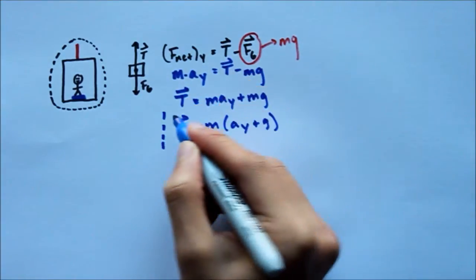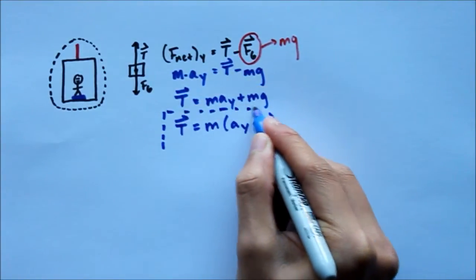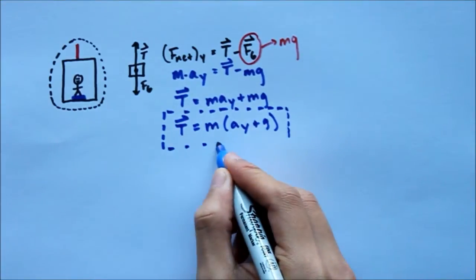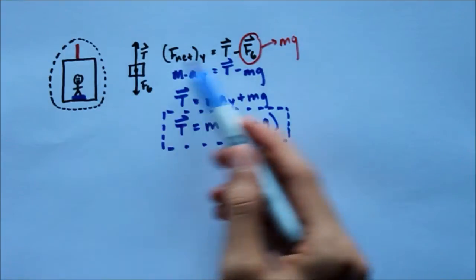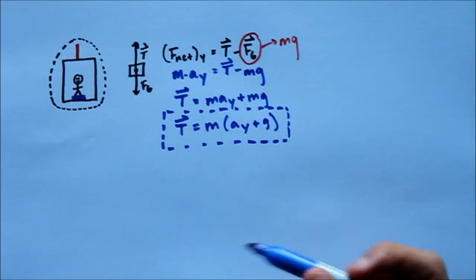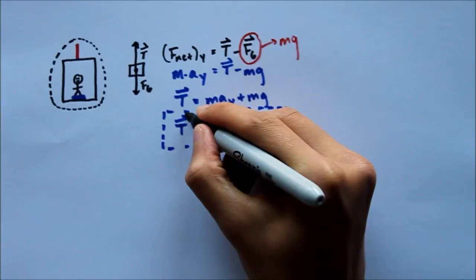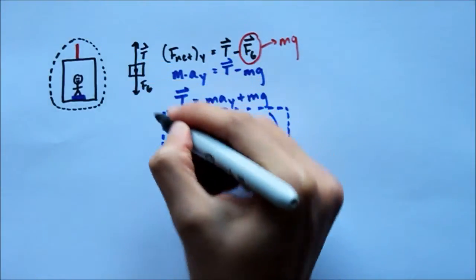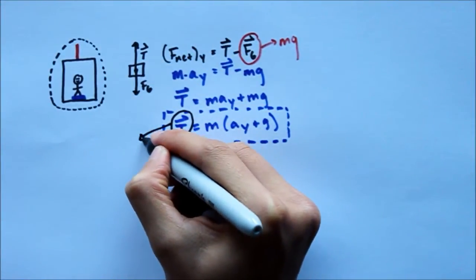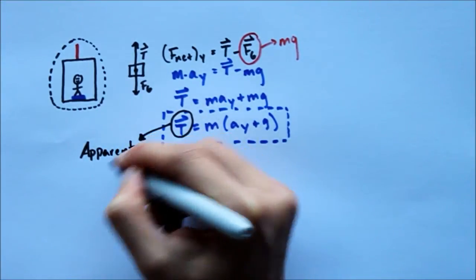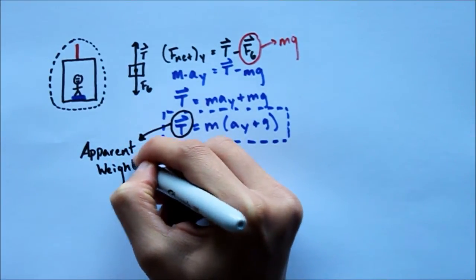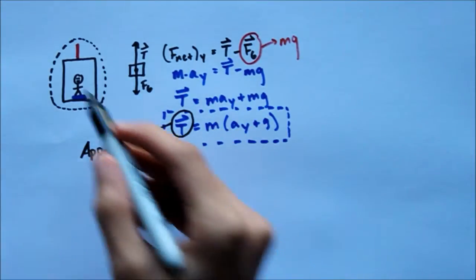Now this is really important for apparent weight on an elevator — this equation is all you're going to need. This is the only equation you're going to have to remember, or maybe you won't even have to remember it because you would just do this process on a test or quiz. Your tension — the tension of that cable — that is going to be apparent weight. That's all apparent weight is: it's your tension when you're on an elevator.